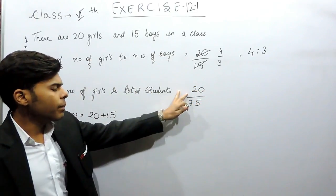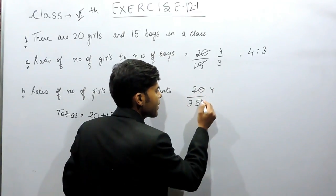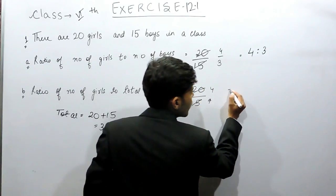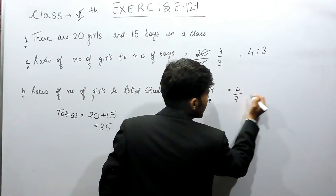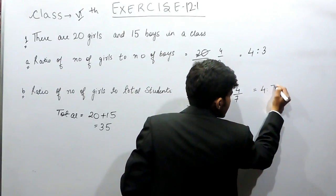Now again, we'll make it in its simplest form five, four times, five, seven times. So it will be four upon seven. That means that it will be four ratio seven.